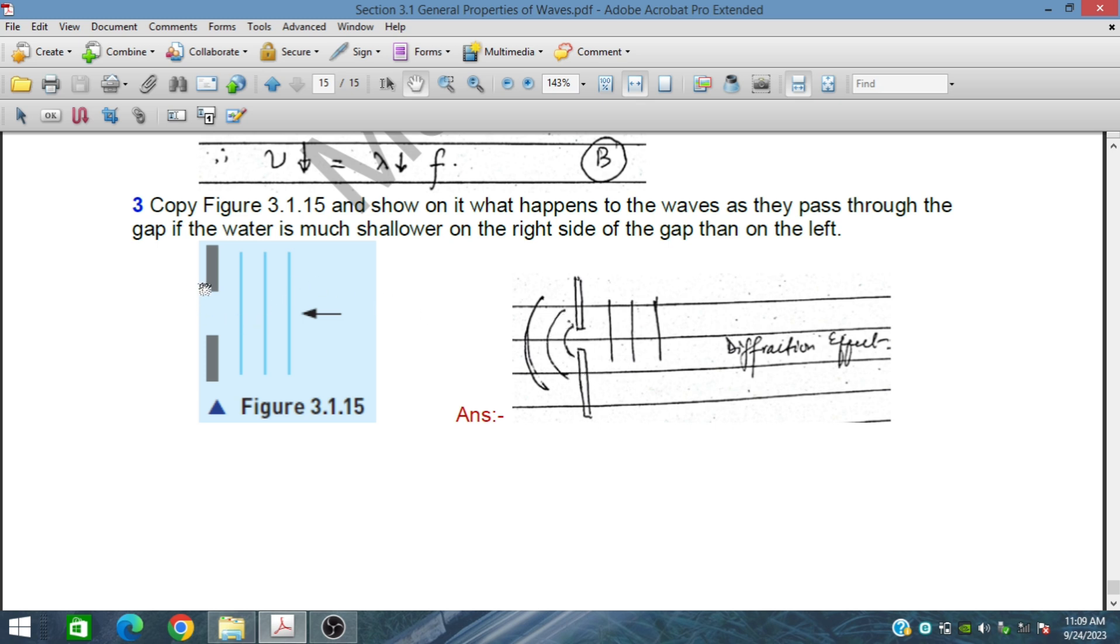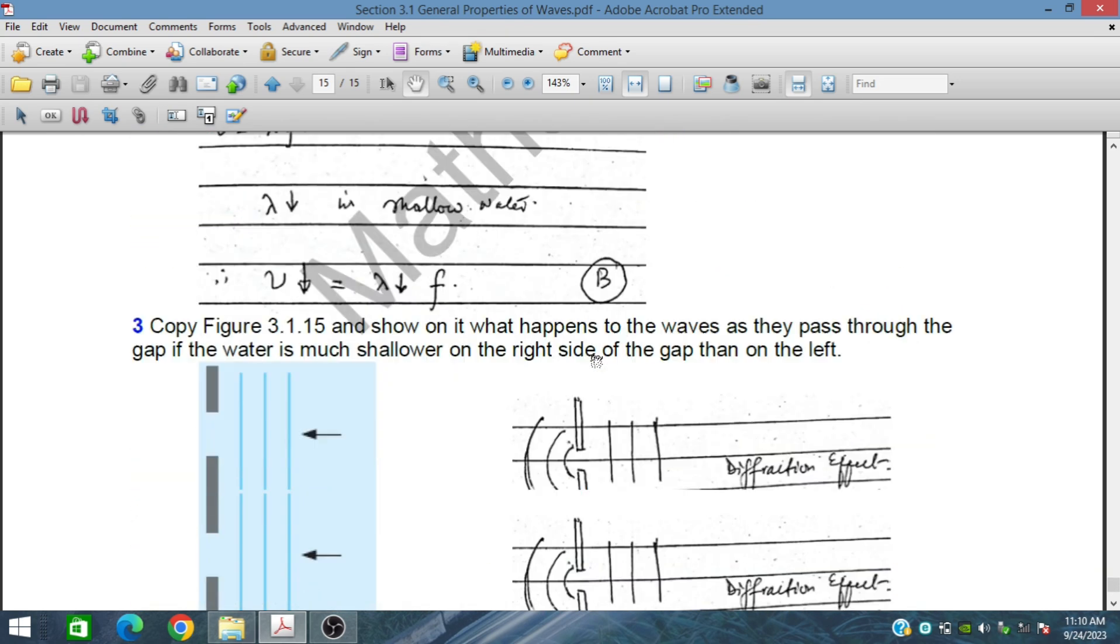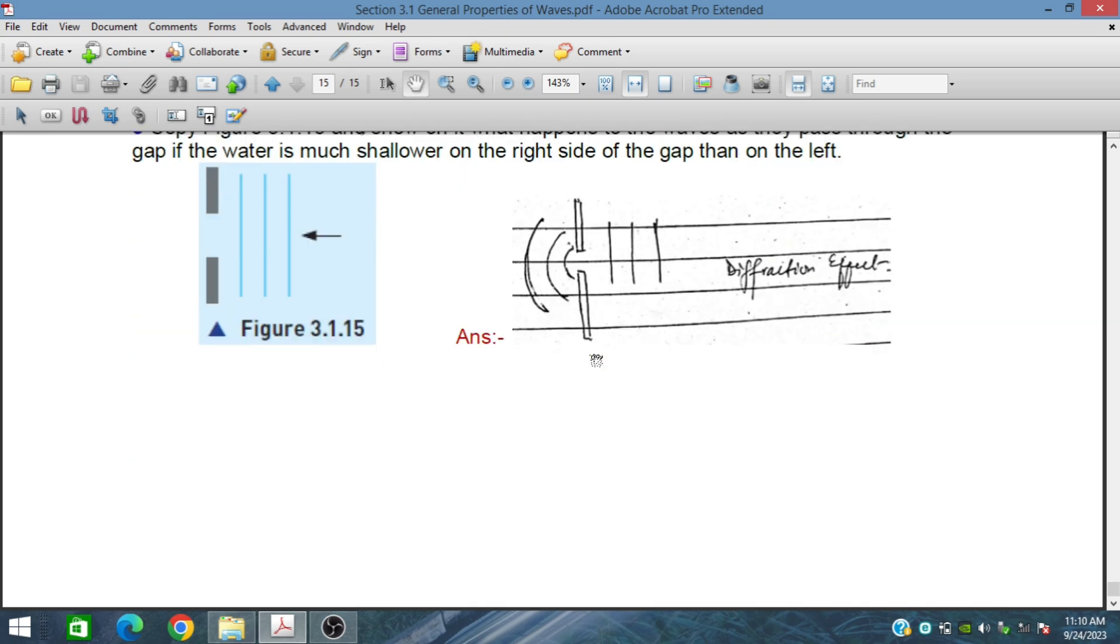Since we are moving from shallow region to the deep region, this wavelength will increase. The distance between the crests will increase and the speed will also increase. This is a diffraction phenomena that will occur for a narrow gap setup. This is very important. This is all, in the next session we will discuss further.